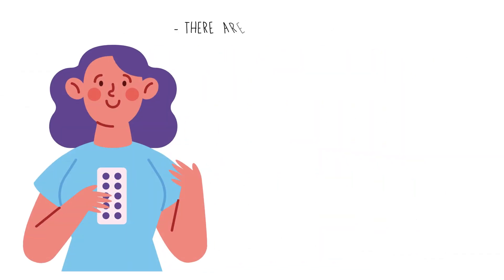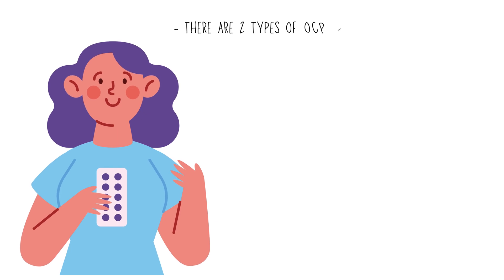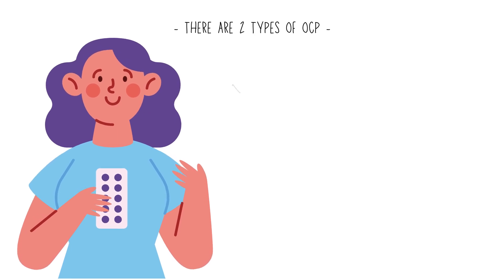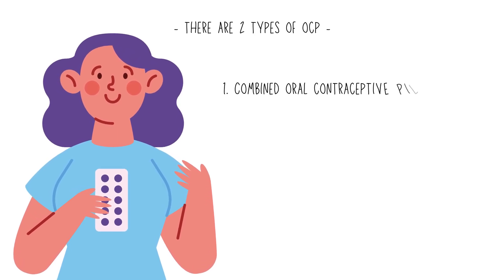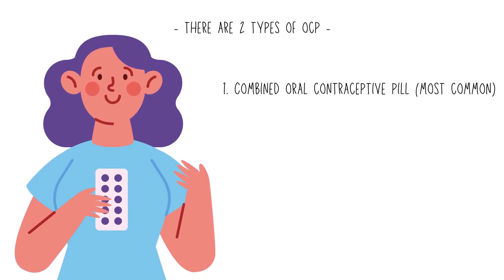There are two types of contraceptive pills: the combined oral contraceptive pill, which is the most common type, and progestin-only pills.